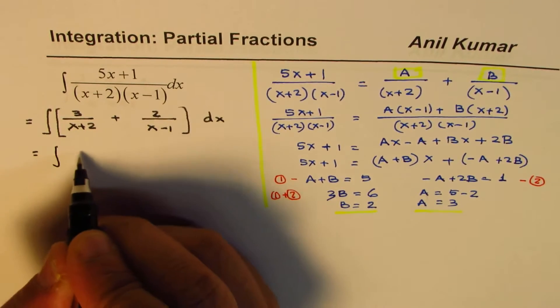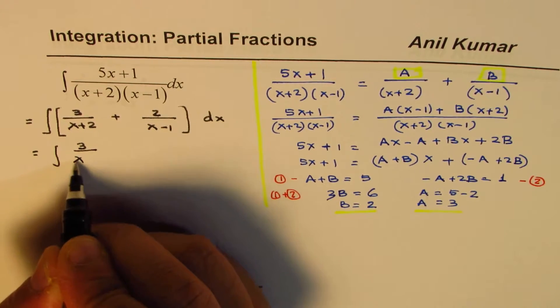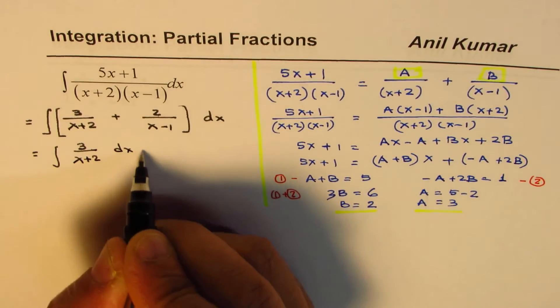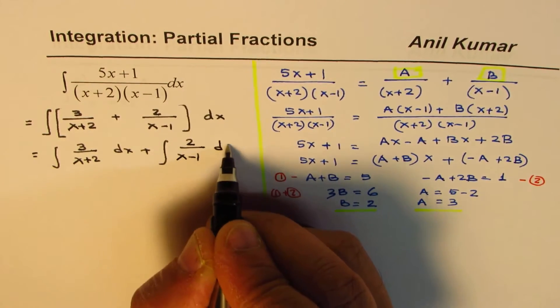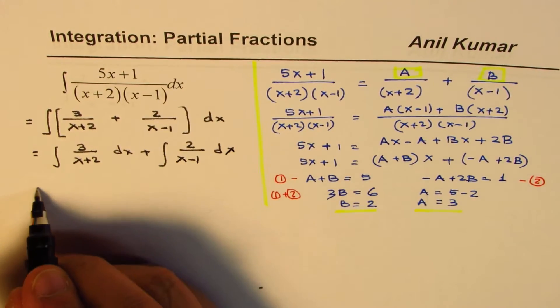Now here, we could write this as integral of 3 over x plus 2 d of x, plus integral of 2 over x minus 1 d of x.